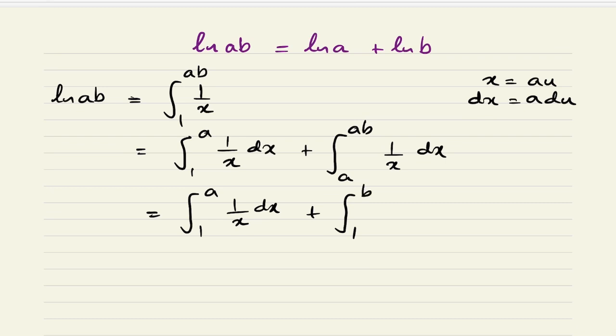Substituting, we get 1/(au) times a du. The a cancels out. If we integrate 1/u du, we get ln(u).